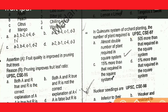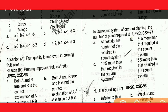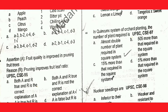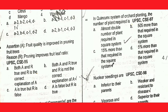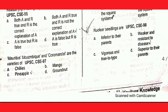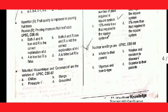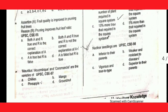Next question: in the hexagonal system of plant planting, the number of plants required is almost double the number of plants required in the square system.